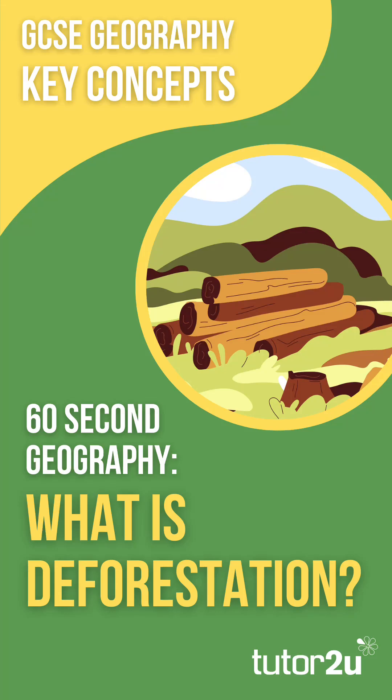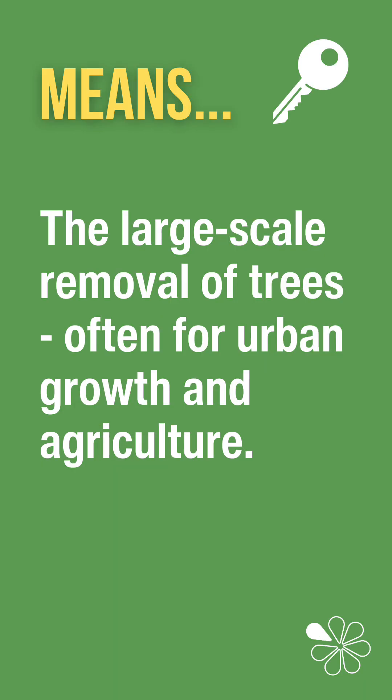Welcome to the 60 Second Geography Short on Deforestation, a key concept for GCSE geography. Deforestation means a large-scale removal of trees, which happens for urban growth, for example clearing land for housing developments and agriculture to create land for grazing or plantations.